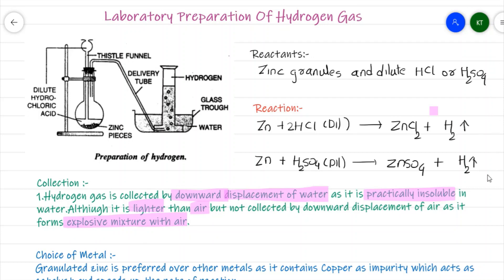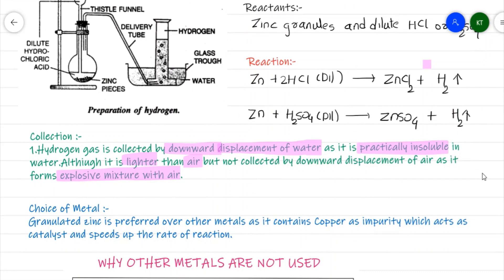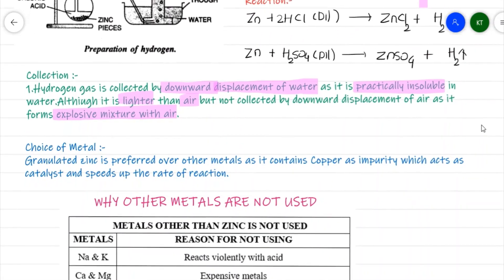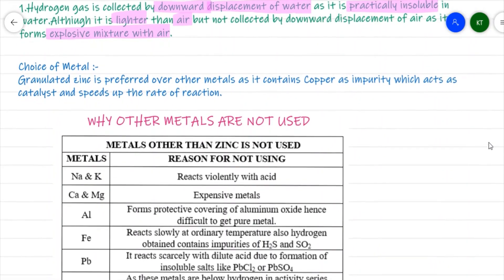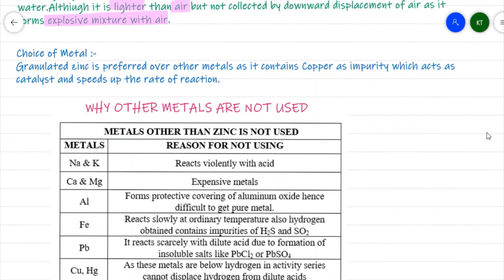In this experiment we use granulated zinc. Granulated zinc is preferred over other metals because it contains copper as an impurity, which acts as a catalyst and speeds up the rate of reaction.